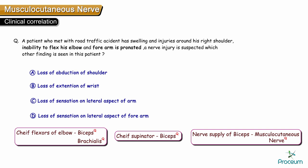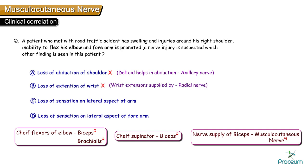With damage to the musculocutaneous nerve, along with loss of flexion and loss of supination, let's consider the other options. Loss of abduction of the shoulder? No — abduction is mainly caused by the deltoid, which is supplied by the axillary nerve. Loss of extension of the wrist? No — wrist extensors are supplied by the radial nerve.